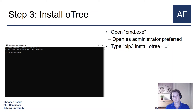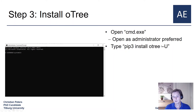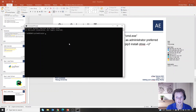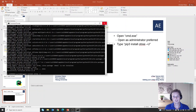Now Python and PyCharm have been successfully installed. The final step is to install oTree. If you use Windows you can do this in your command prompt; if you use macOS, use your terminal. It is preferred to open this as an administrator. The command you need to type is: pip3 install oTree -U, all lowercase. Once oTree is successfully installed, your setup is ready to program your first oTree experiment, which is something Victor will show you in the next video.